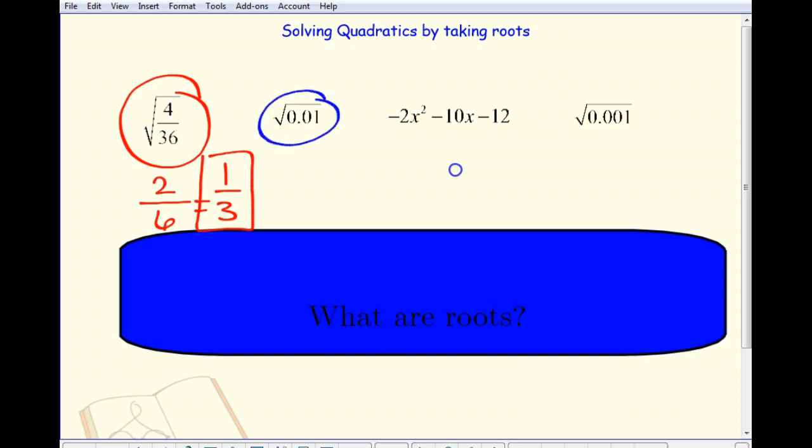Over here, we've got a couple of options. Again, I don't want to pull up my calculator, so I'm just going to rewrite that as a fraction. And that's the same exact thing. Remember, 0.01 is 1 hundredth. There's 1 hundredth right there. And that's going to simplify to 1 tenth.